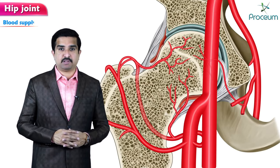Hip dislocations typically require a high degree of force. Approximately 65 percent of cases are related to motor vehicle collisions, with falls and sports injuries causing many of the rest — dashboard injuries are a major cause. For diagnosis, anteroposterior X-rays of the pelvis and AP and lateral views of the femur including the knee are ordered. The size of the femoral head is compared across both sides: it appears larger if the dislocation is anterior and smaller if posterior. A CT scan may also be ordered to clarify the fracture pattern.